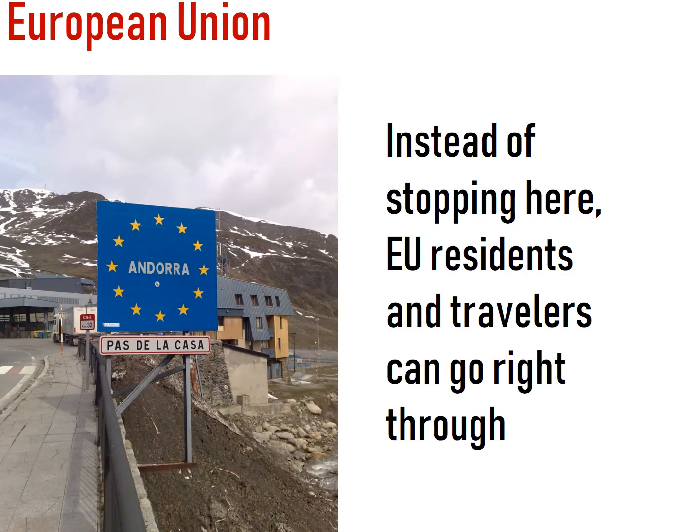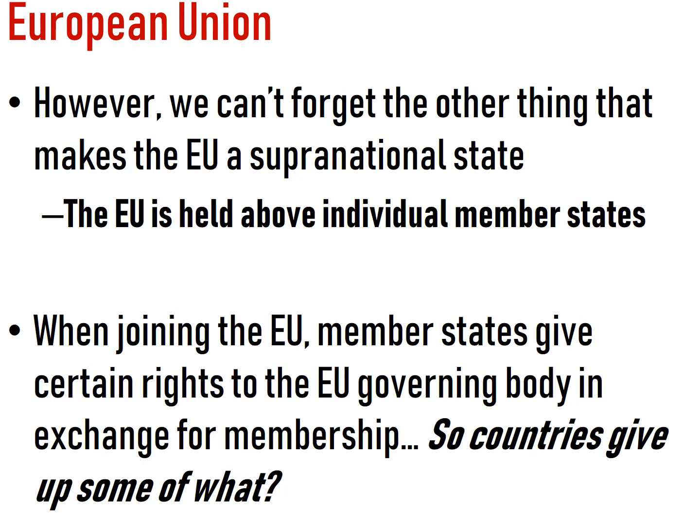Here's an example of what a border crossing looks like in Europe — there's just a sign, nothing else, you just go through. But remember, while this is great and these countries can move people and money around faster and trade more efficiently, the EU is stronger than the individual states. When joining the EU, member states have to give up certain rights in exchange for membership — and what is that vocab word? That would be their sovereignty. They're giving up some sovereignty to join.